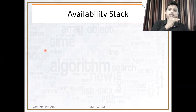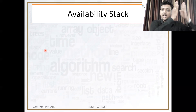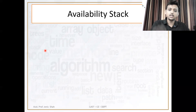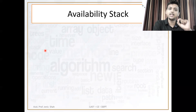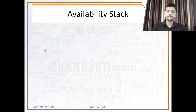Whatever empty spaces are in the memory are combined in the availability stack. The availability stack is nothing but a collection of nodes which are empty, which are not allocated by any type of linked list.